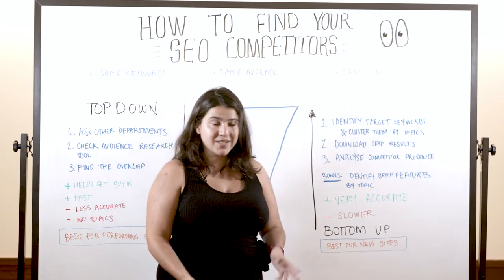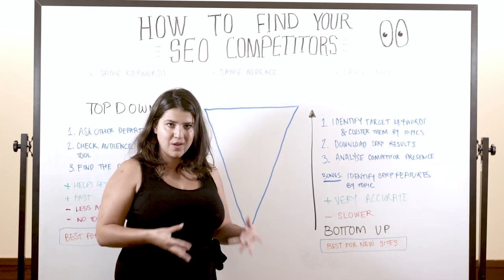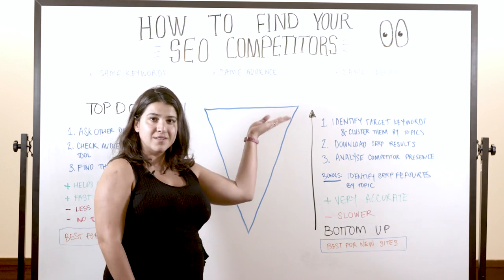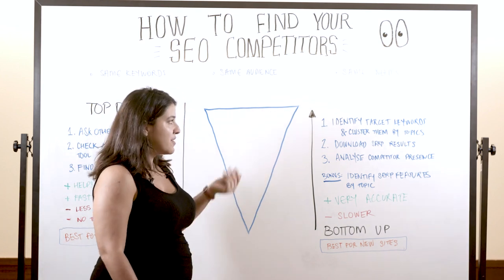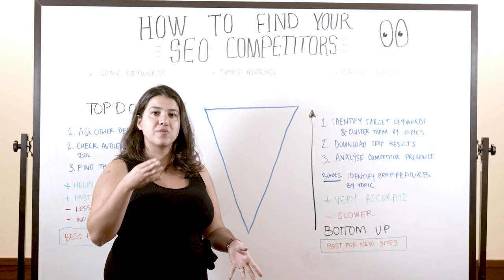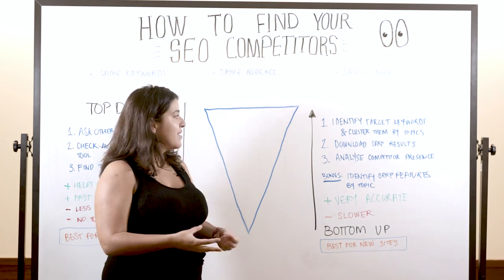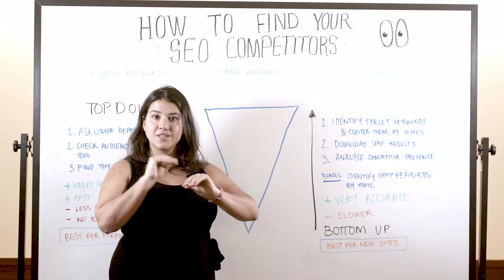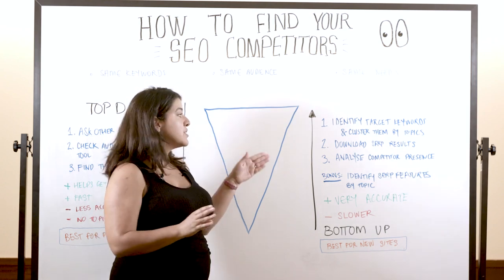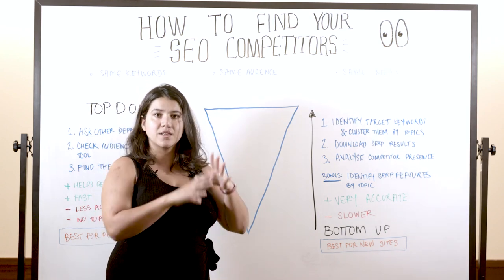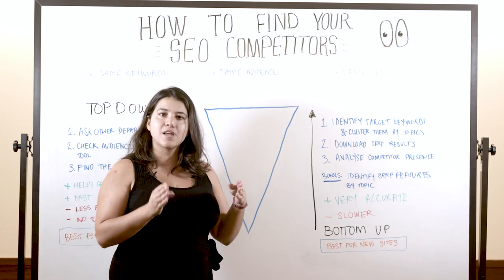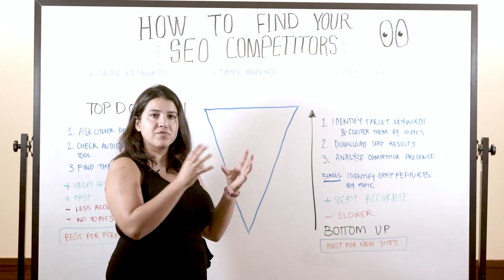But if you're starting a new site or if you really want to dig into who your competitors are, you're going to want to do the bottom-up approach. The very first thing you're going to do is identify your target keywords and then cluster them into topics. For each of those keywords, you're going to download the SERP results — the top 10, the first page.